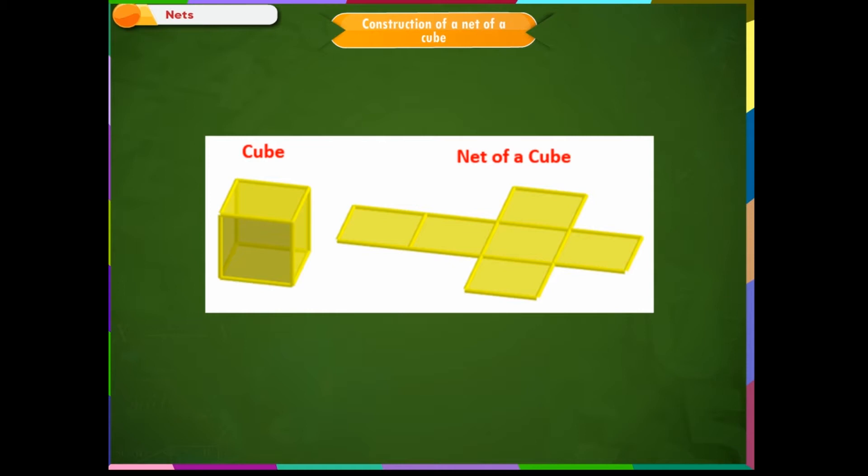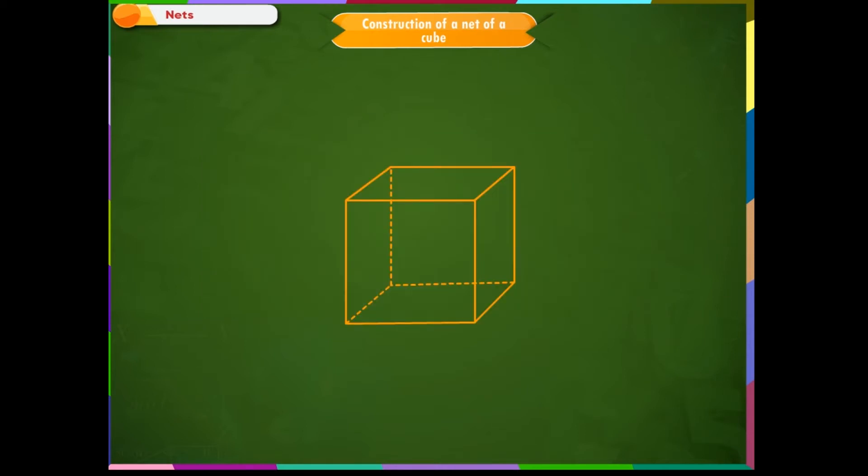Observe the figure given on the screen. Construction of a net of a cube can be understood with the following steps. Let us take a 1 cm cube as shown on the screen. We know that there are six faces in a cube which are equal in dimension.